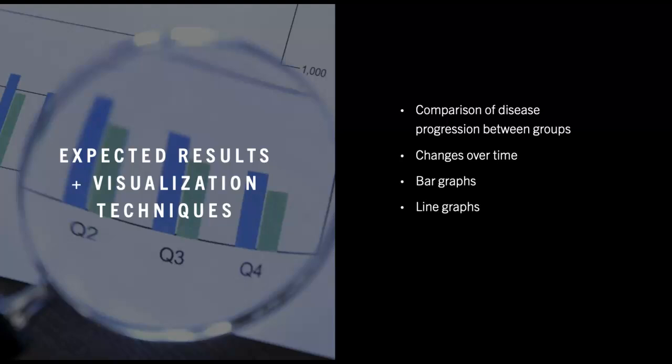To visually represent this, we can use bar graphs to compare the levels of key markers, inflammation, and cell death between the two groups. To show how disease progression changes over time, particularly the rate at which cells deteriorate or recover, we can use a line graph. These visualizations provide a clear and accessible way to convey the differences in how COVID-19 impacts disease progression in different patient populations, helping the audience grasp the significance of our findings.